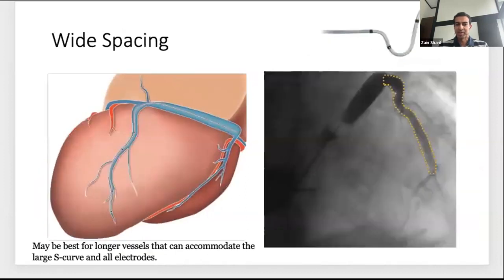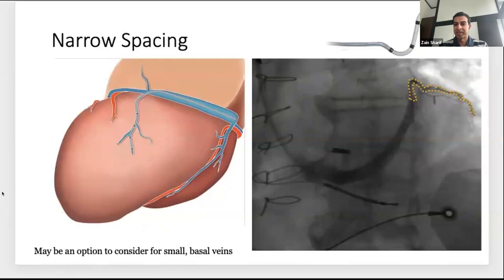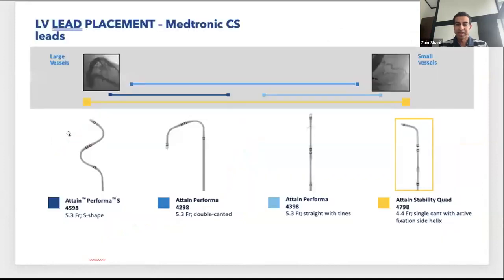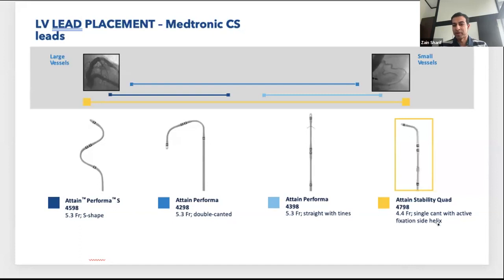Lead spacing considerations: wider spacing is better for long vessels that accommodate a large S-curve and its electrodes; narrow spacing for smaller, more basal veins; double-band leads for medium-sized vessels. For larger vessels, a larger S-shape; for smaller vessels, a straight lead. Active fixation quad leads — such as the stability quad — allow fixation in large veins where passive leads might dislodge. Knowing the full armamentarium from every company makes you a better implanter.